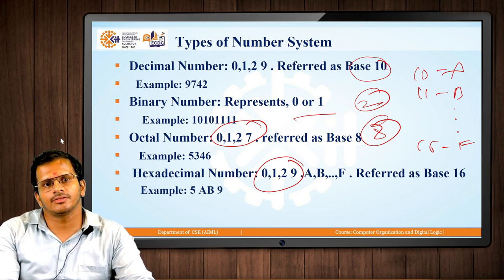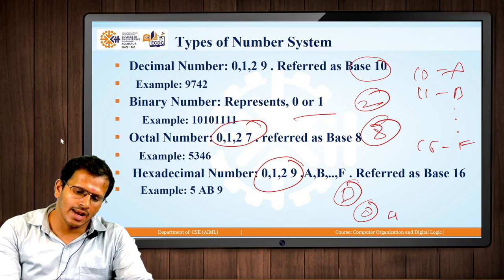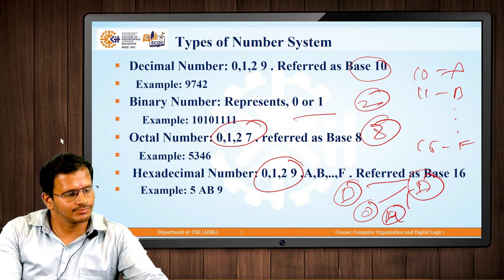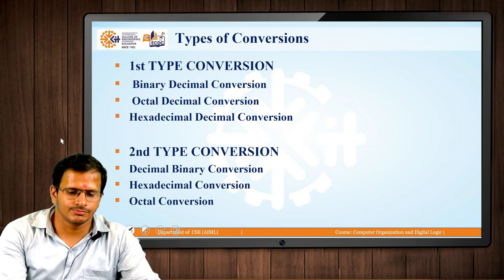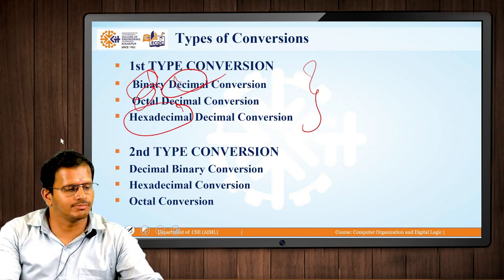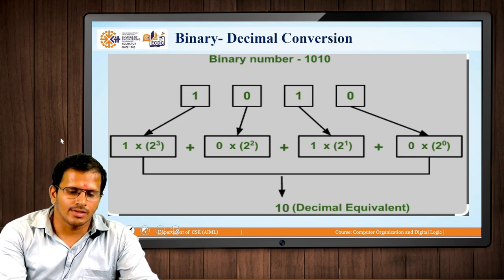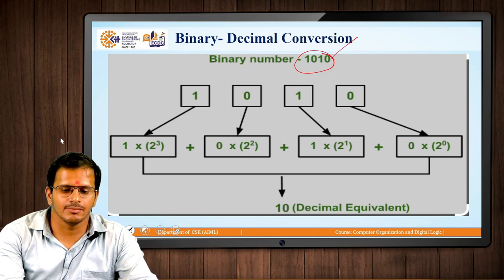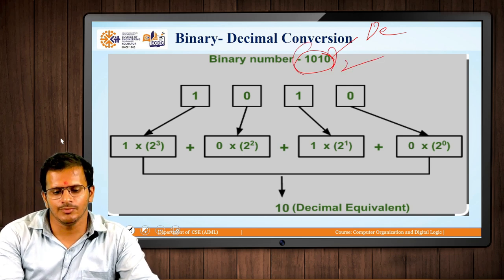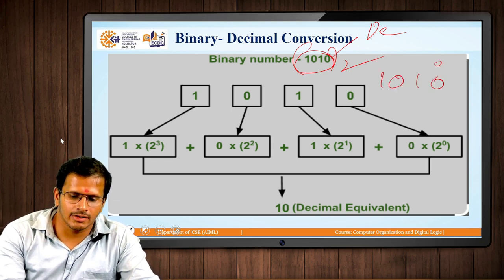First, we will consider three types of conversion. We will try to understand how to convert binary, octal, and hexadecimal to the decimal number system. In the Type 1 conversion, if a binary number is represented as 1010 and we have to convert it into decimal, we use powers of 2 because the radix is 2. For the number 1010, we assign positions as 0, 1, 2, and 3 from right to left.